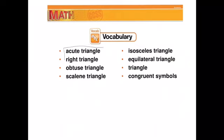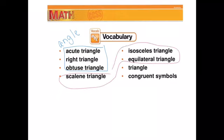These first three listed right here—acute, right, and obtuse—are based on the actual angle. Then when I look at scalene plus these two over here, the isosceles and equilateral, those are going to be based on the sides of the triangle.